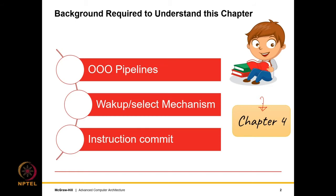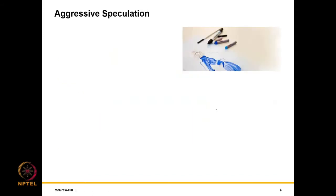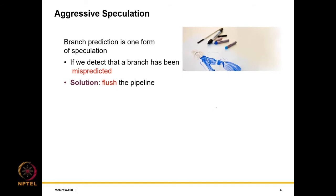We will start with out-of-order pipelines as required background. We need to know the wake-up select mechanism in great detail, and finally precise exceptions and instruction commit. The requirements for this chapter are these three things from Chapter 4. In Chapter 5 the main topic is called aggressive speculation, where we complicate things — much like a complicated painting drawn with just 3 or 4 simple crayons.